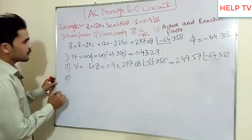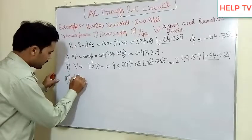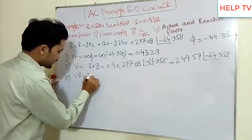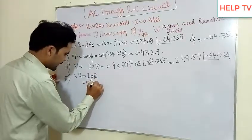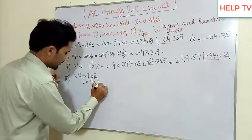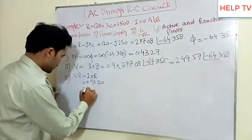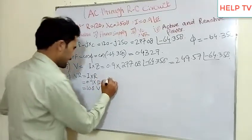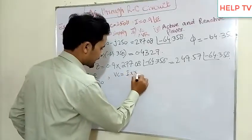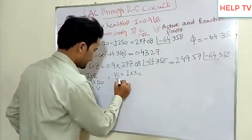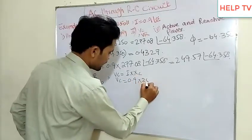The third part is VR, which equals I multiply by R. This gives us 108 volts. VC equals 225 volts. These are our voltage values.